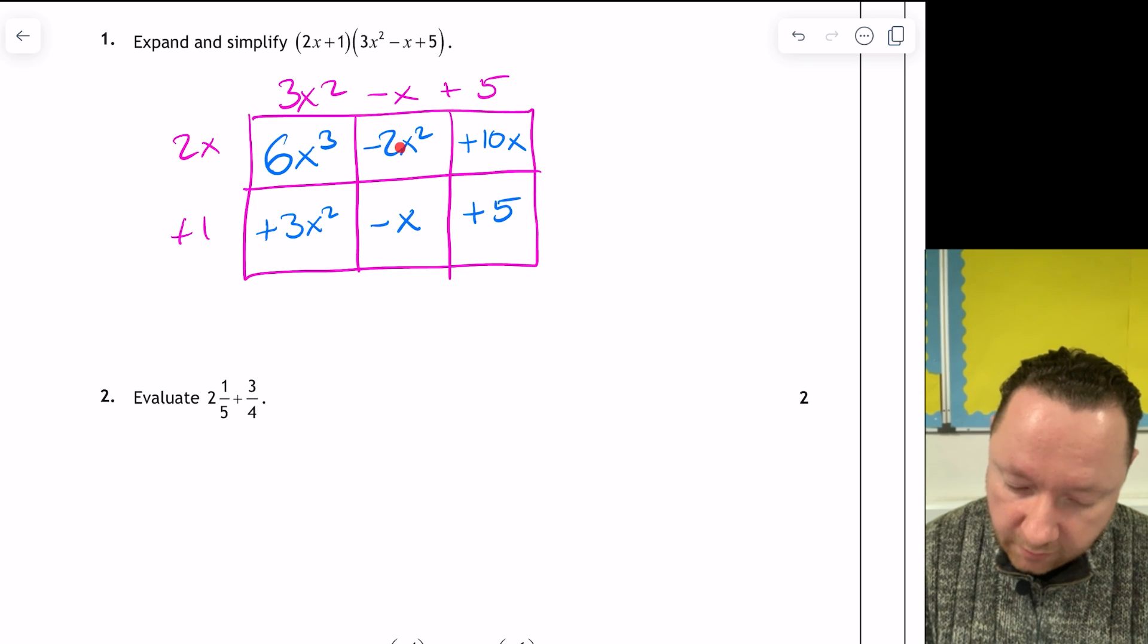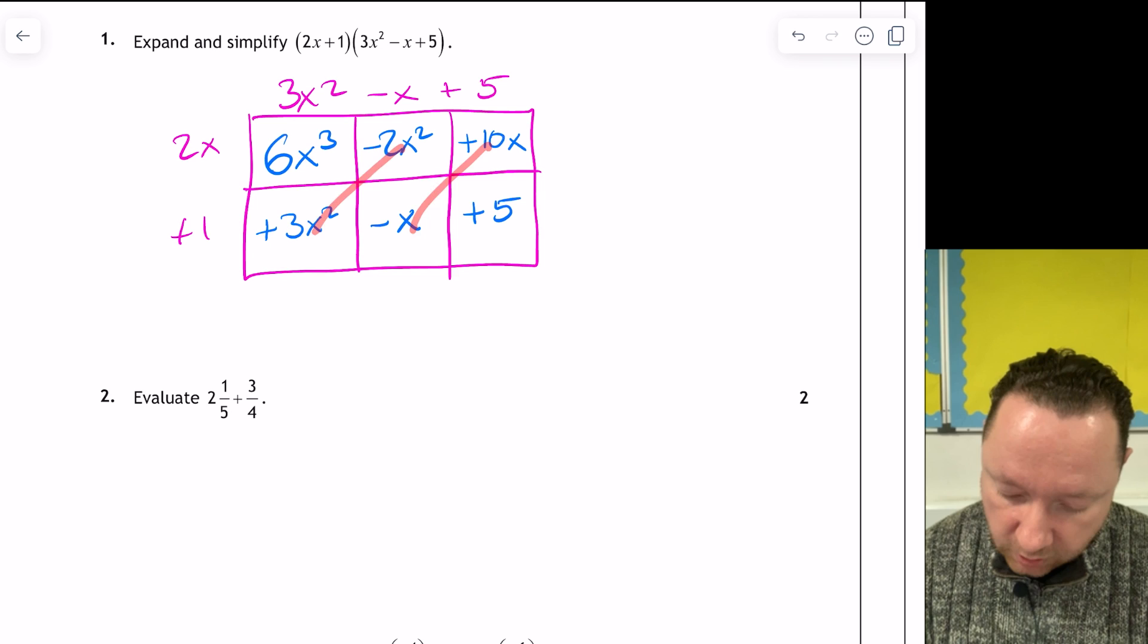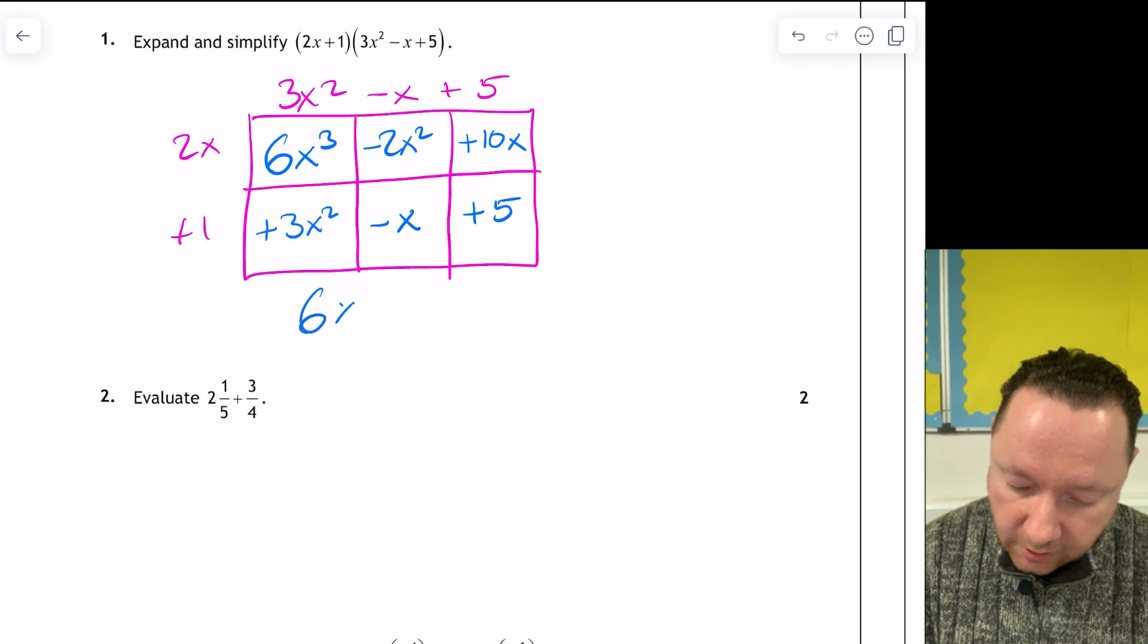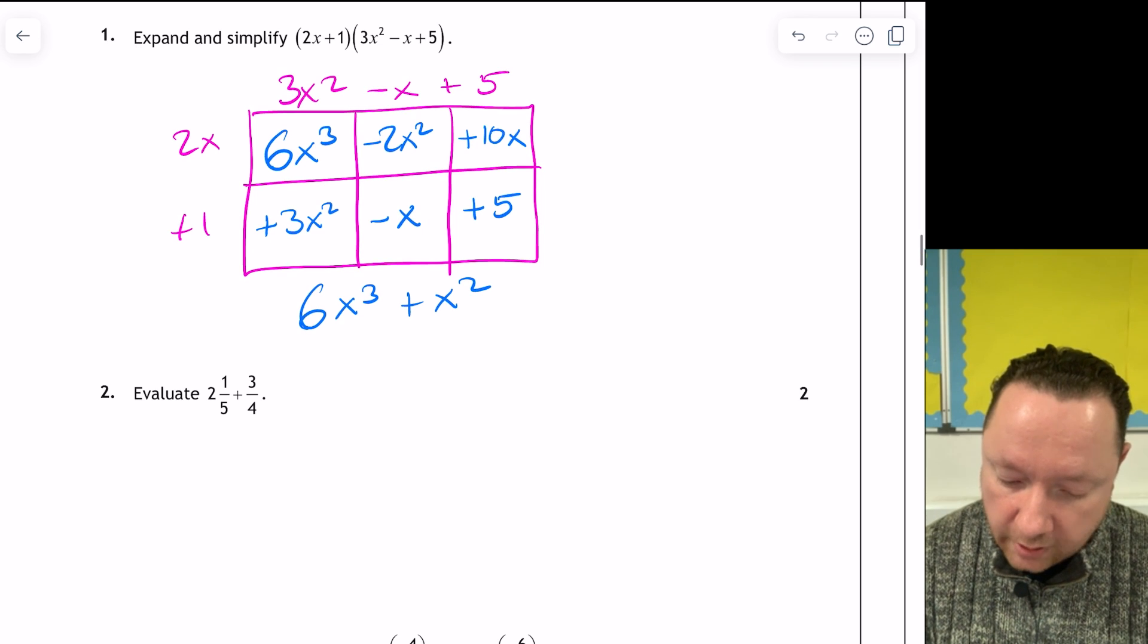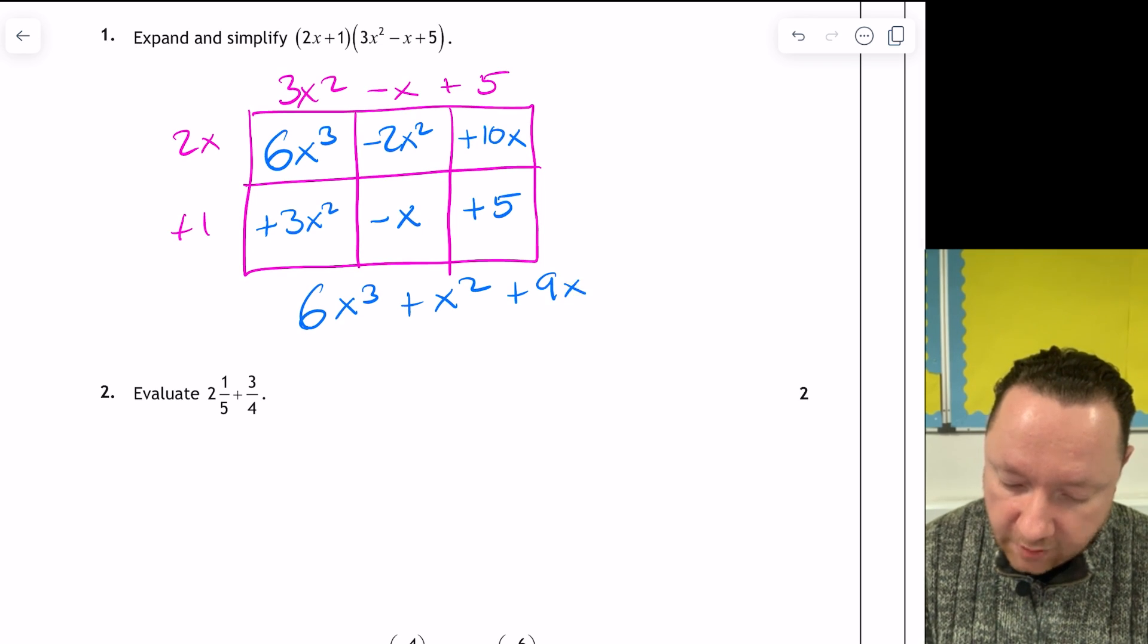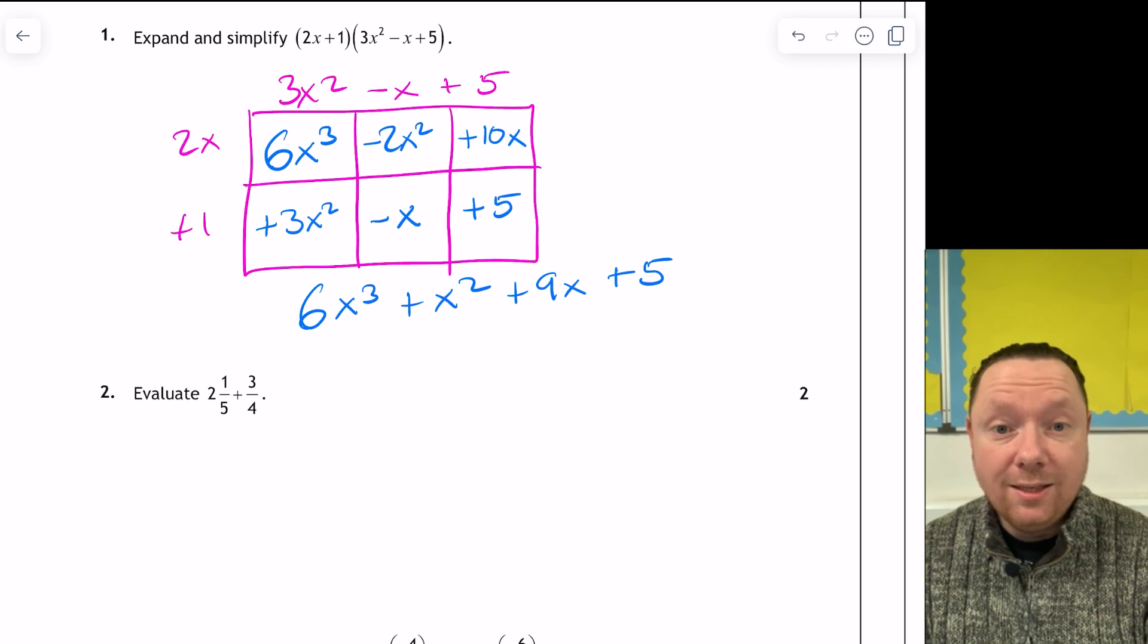I'll write plus 3x squared. 1 times x is x, so minus x, and 1 times 5 is 5. And then you should be able to see that these go together. So our final answer is 6x cubed. 3 take away 2 is 1, so plus x squared. 10 take away 1 is 9, so plus 9x, and then plus 5 on the end.